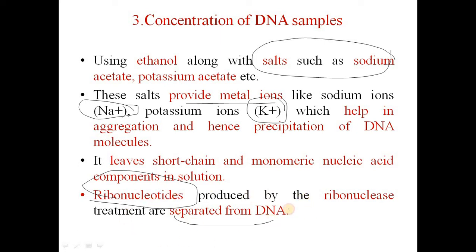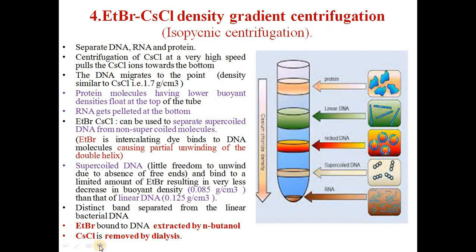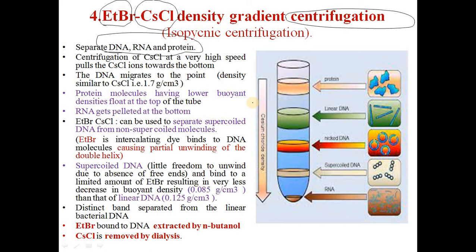The fourth step is density gradient centrifugation using a combination of ethidium bromide dye and cesium chloride. This is also called isopicnic centrifugation, and it separates DNA, RNA, and protein. High-speed centrifugation is used to separate the different components of the bacterial cell. Cesium chloride has a density of 1.7 g/cm³, and DNA molecules migrate to the point of similar density.